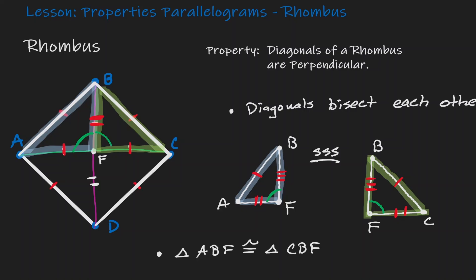We have angle BFC here on the diagram. Now let's think about this — notice that if you add those two angles you get a straight line. A straight line has 180 degrees, and notice that we're cutting it into two equivalent parts.